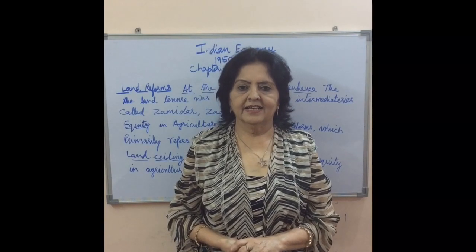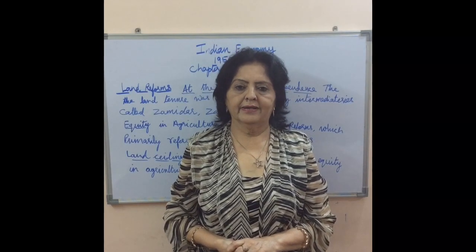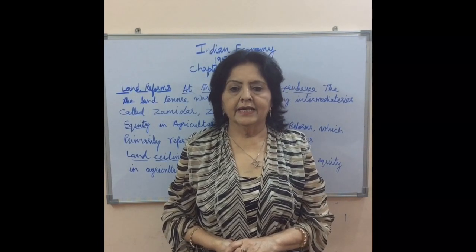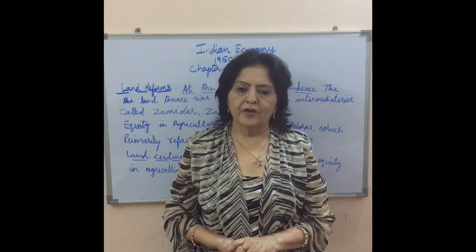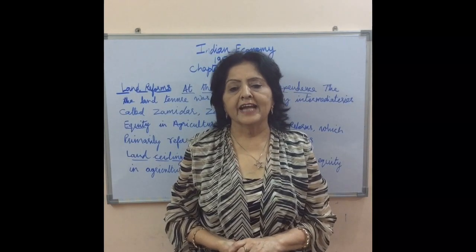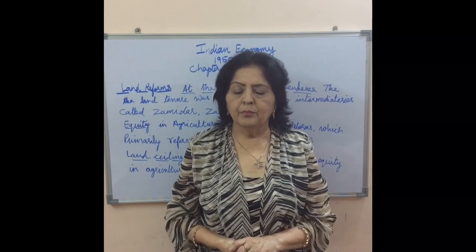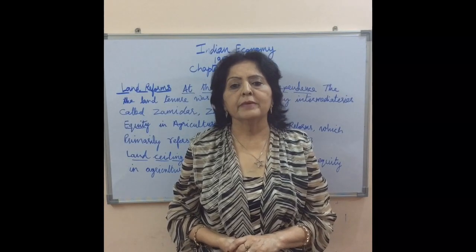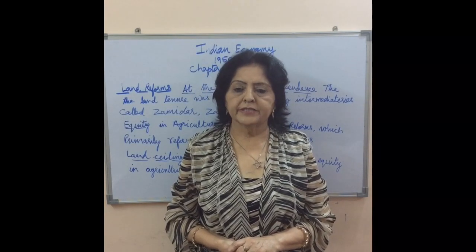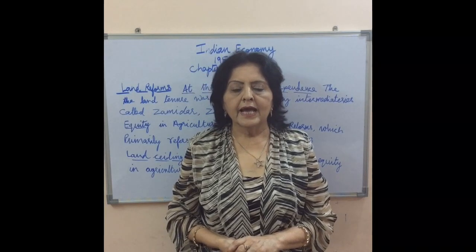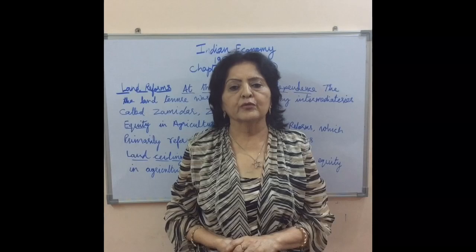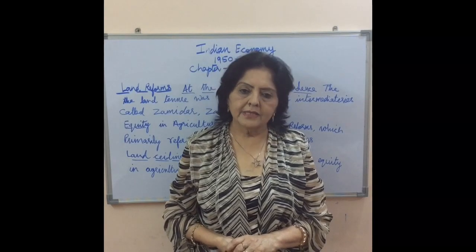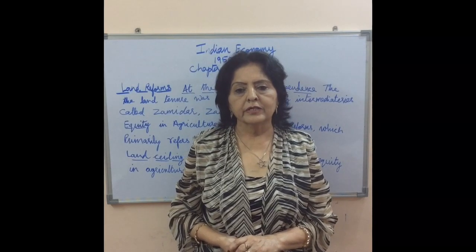Hello friends, welcome everyone. Today continuing with Chapter 2 of Economics — Indian Economy from 1950 to 1990, Chapter 2 Part 3. We are going to discuss how the policy makers were able to tackle the problems and attain the goals with reference to agriculture, trade and industry. In this video we are going to talk about agriculture.